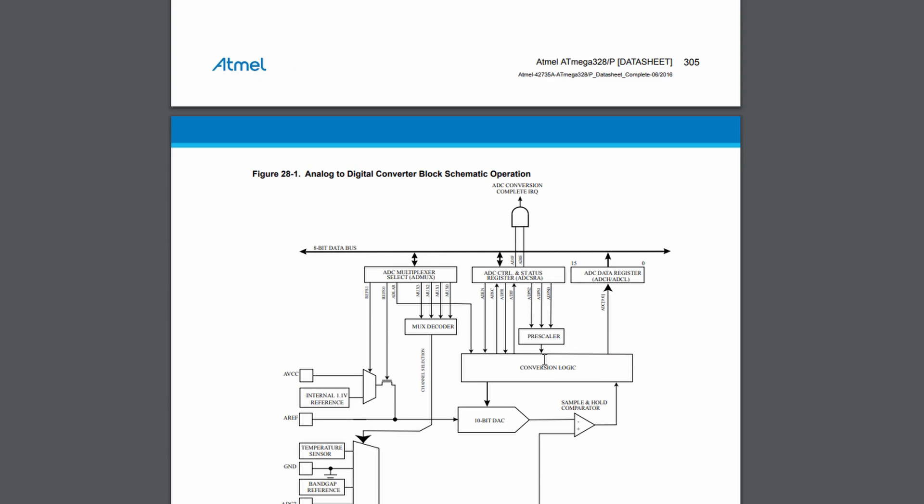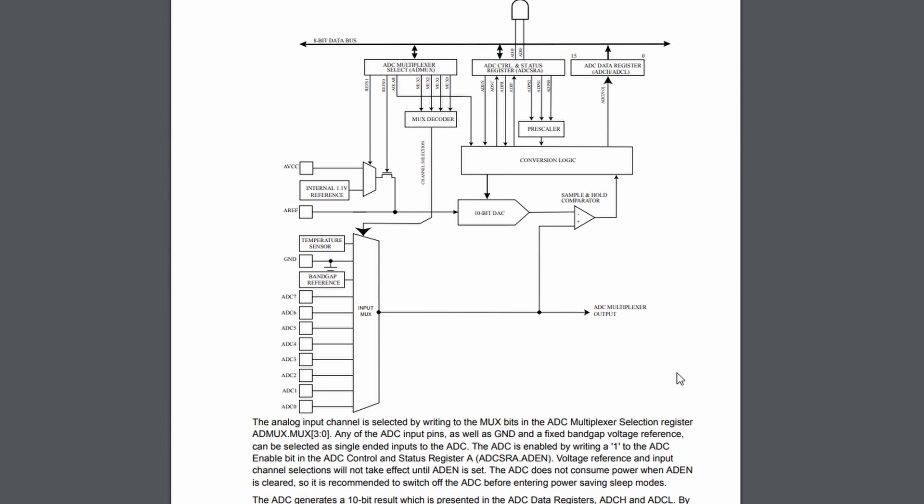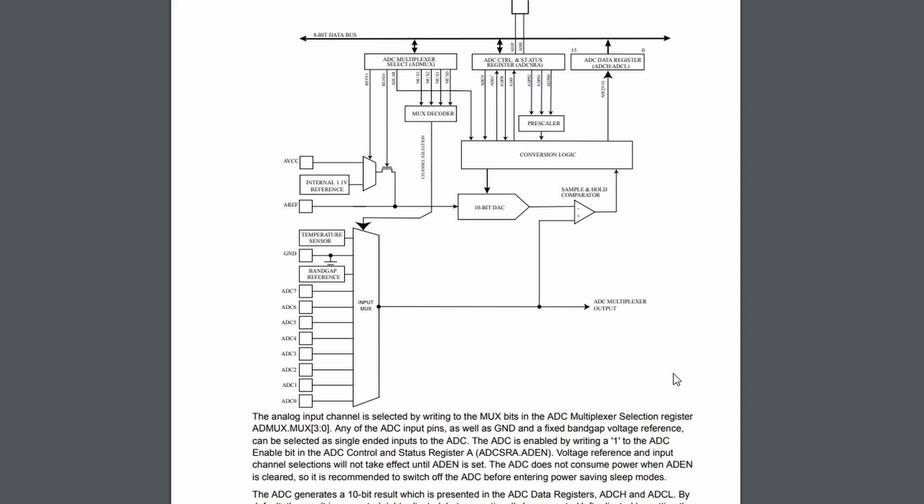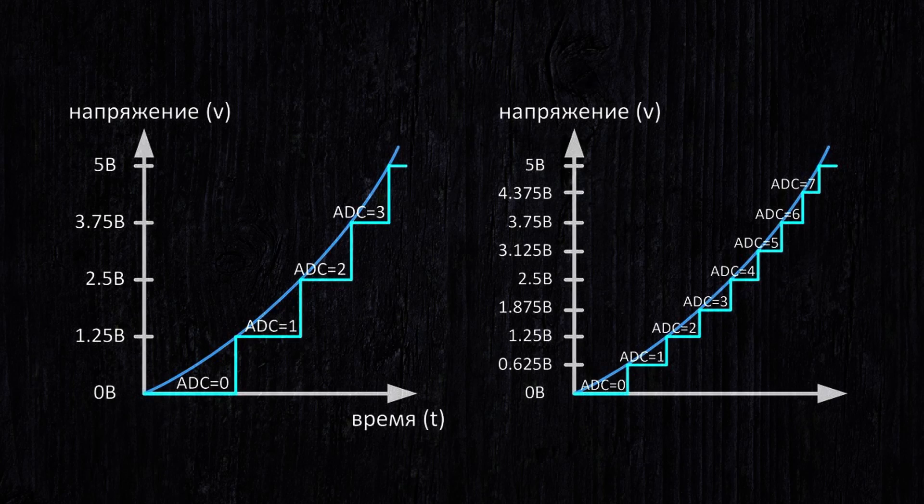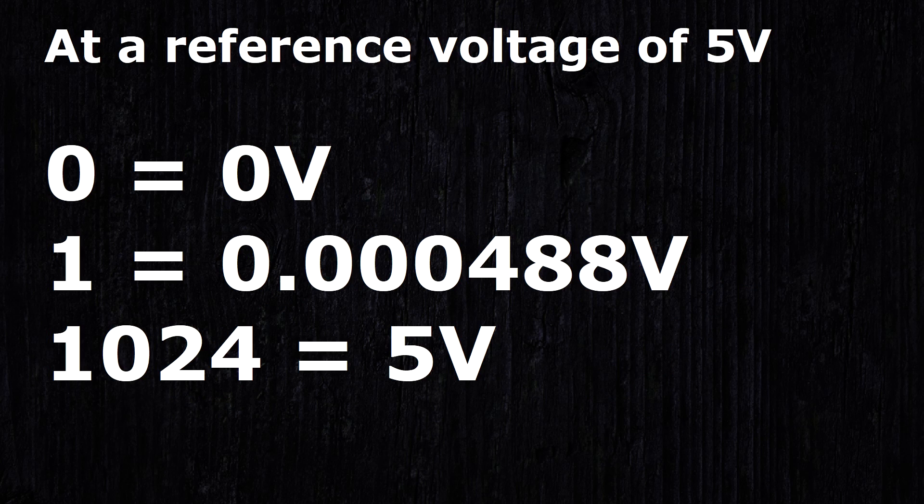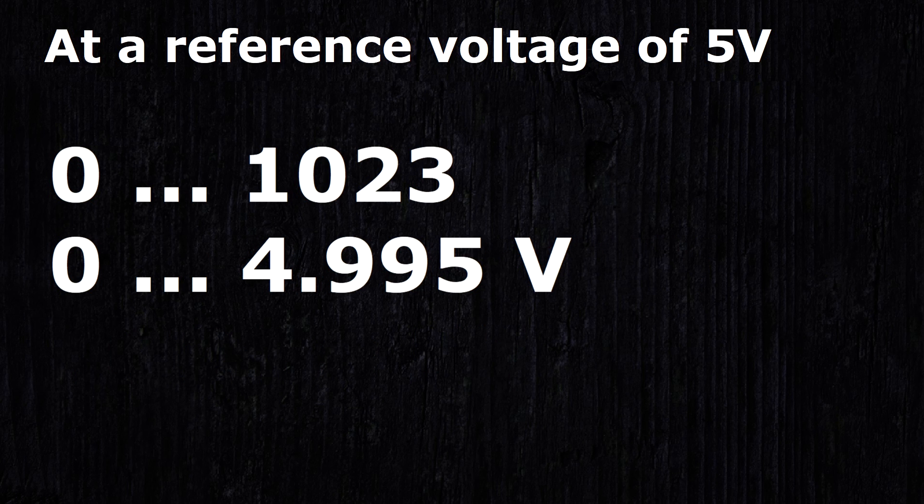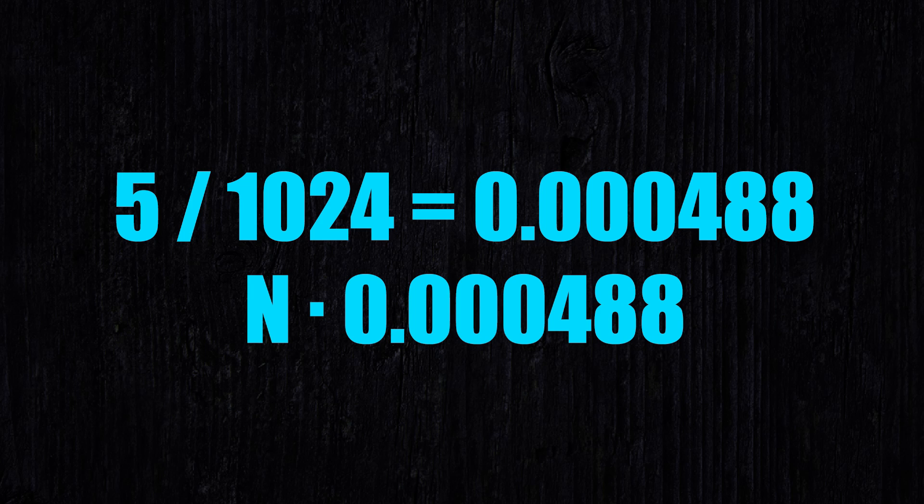for example, 5 volts. The second important parameter is resolution. In our case, this is 10 bits. That is, the range from 0 to 5 volts is divided into 1024 equal pieces. So, our digital code can take values from 0 to 1023. Dividing 5 volts by the number of pieces, we get the size of the piece in real volts, and then knowing the number of pieces, we will restore the real value in volts. First,